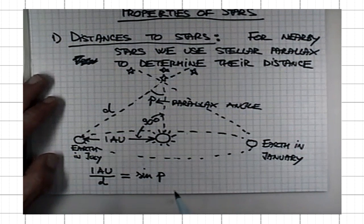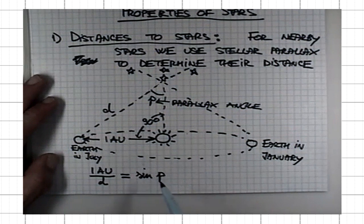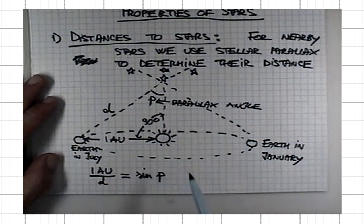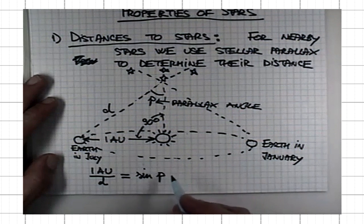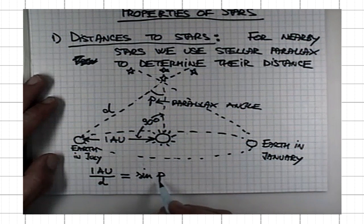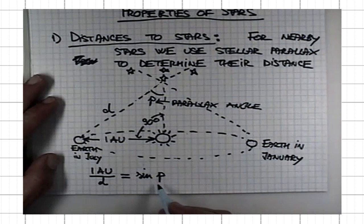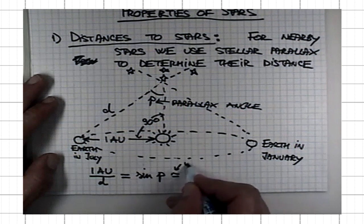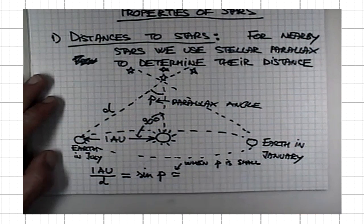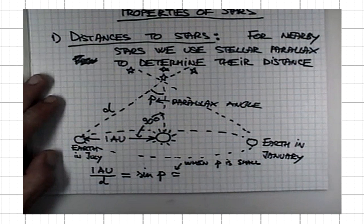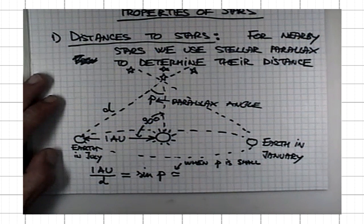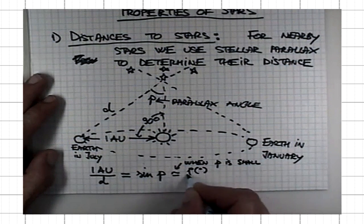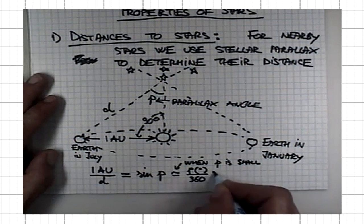It turns out that for small angles, and the stars are so far away that the parallax angle is very small. For small angles, the sine of the angle is approximately equal to angle but expressed in radians. Approximately, when p is small, this is equal to the angle, but angle expressed not in degrees but in so-called radians. If you have a p in degrees, then you have to divide by 360 and multiply with 2 pi.